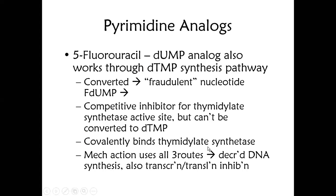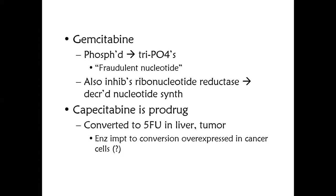5-Fluorouracil also decreases transcription and translation because DNA is not being formed. The next drug is gemcitabine, which is phosphorylated to a triphosphate form — again a fraudulent nucleotide. Nucleotides are the backbone of DNA, so if you insert a fake nucleotide into the DNA base sequence, it will break the chain and the DNA cannot replicate or translate. This mechanism is similar to what we use in AIDS treatment — the nucleoside and nucleotide reverse transcriptase inhibitors.